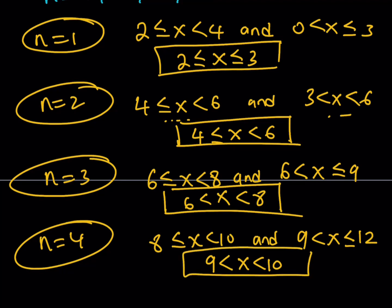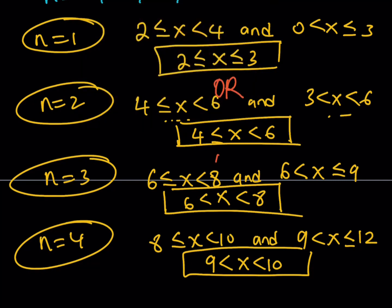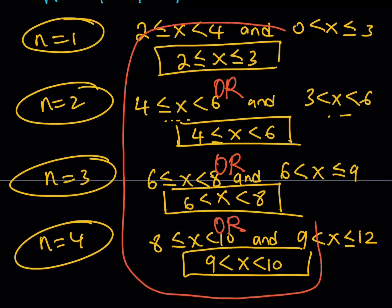So we have four intervals. Notice that x can sometimes be an integer: x equals 2, 3, 4, 5, and 7 are all integer solutions. Combining all four intervals with OR, the full solution set is: x in [2, 3], or x in [4, 6), or x in (6, 8), or x in (9, 10). Those are all possible solutions for our equation.